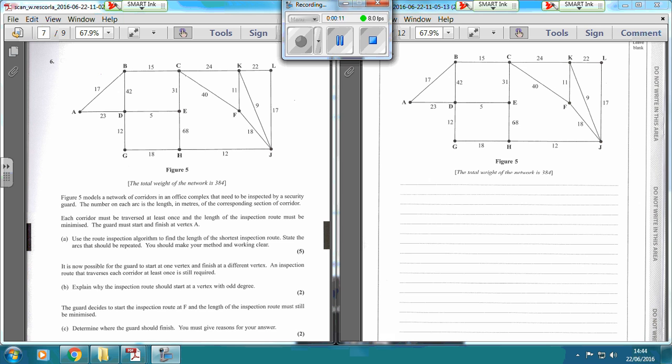So the route inspection algorithm - what we need to do for route inspection is we identify all of the vertices with an odd valency, so an odd number of arcs going into them. So it's going to be, we've got three for B, three for E, three for H, and then there must be another one around here, F.